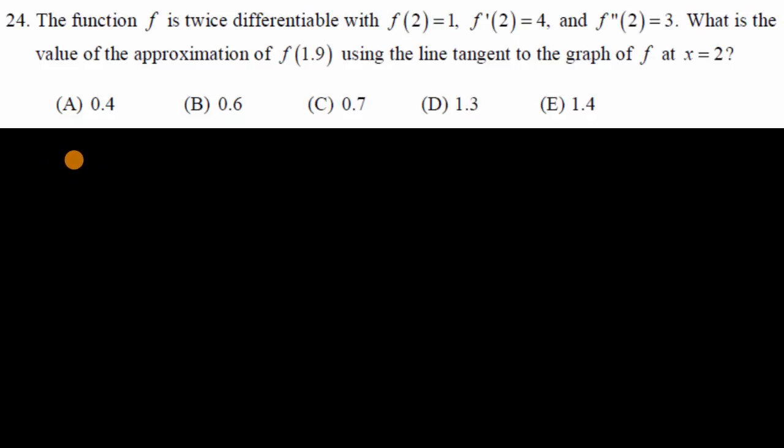So let me graph this. Let's say that's my y-axis, and this is my x-axis. This is x = 1, this is x = 2, this is y = 1. We know that the point (2,1) is on the graph of y = f(x). So we know that point right over there is there.